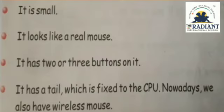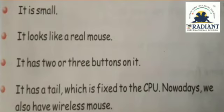It has two or three buttons on it. In MCQ, if option is one, never ever mark one, because a mouse always has two or three buttons. It has a tail which is fixed to the CPU. Nowadays, we also have a wireless mouse. There are so many types of mouse — wireless mouse was also there.